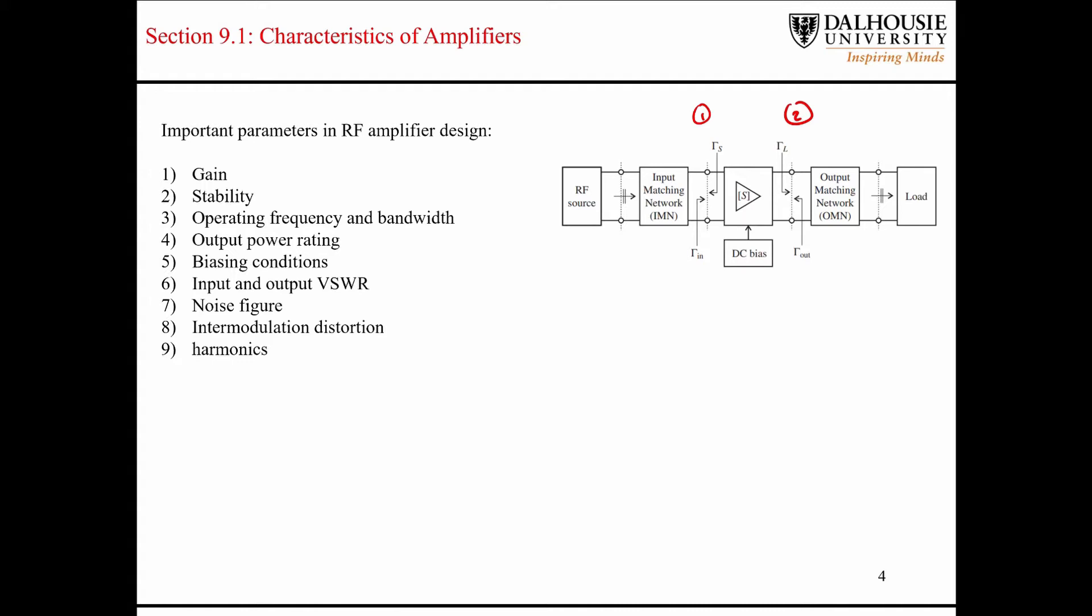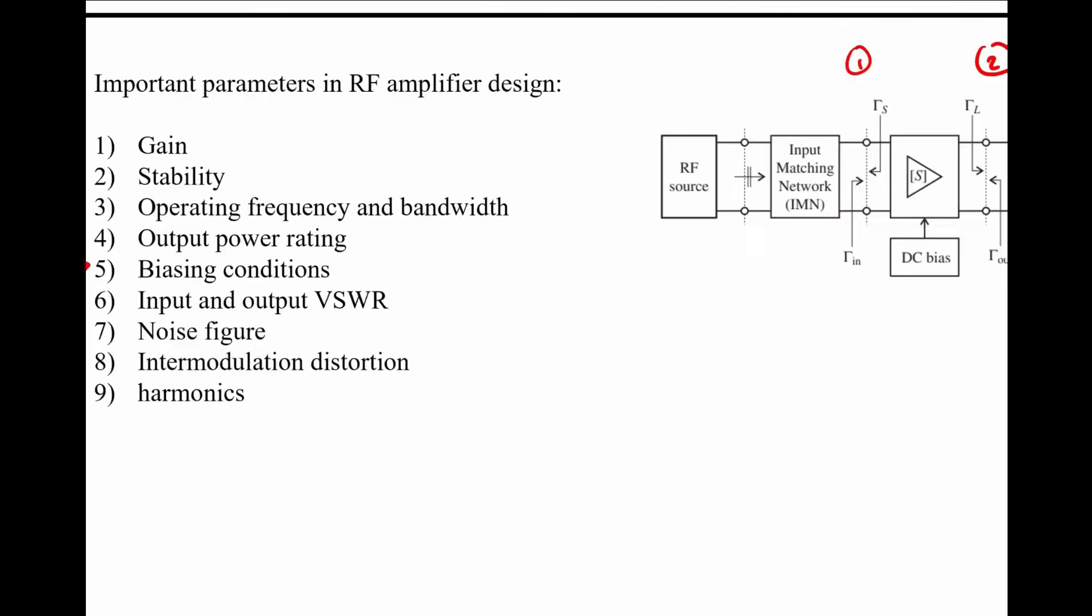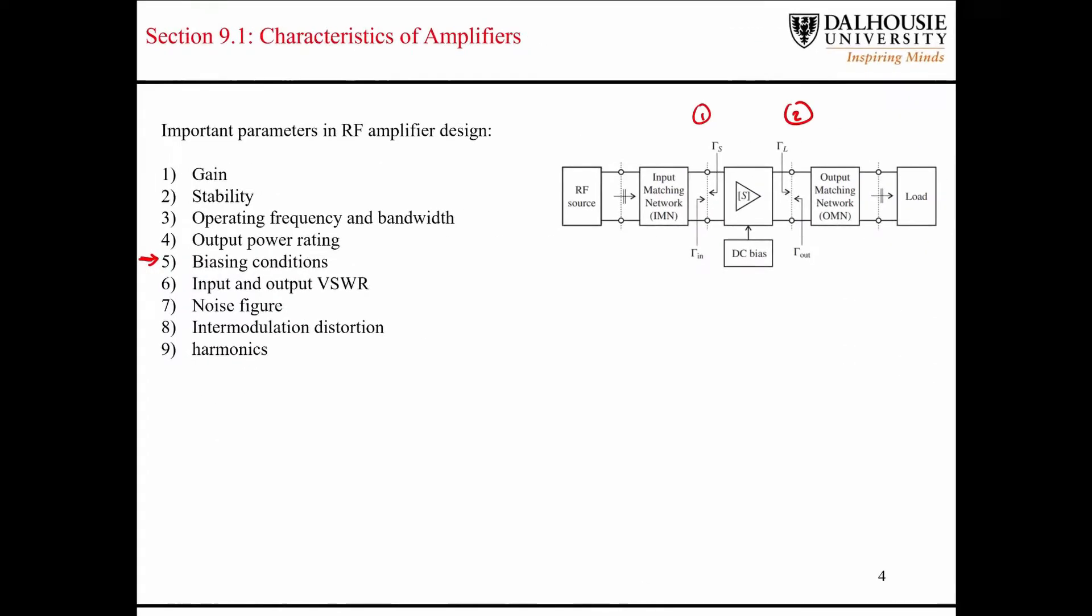And what I mean there is that we're not going to be designing the bias networks ourselves. But you have to know that they exist, and in practice you would have to design the bias networks. We just don't have time. So at Dalhousie University we have other classes on analog circuit design, and I'm assuming that you are gaining the necessary skills in those types of courses.